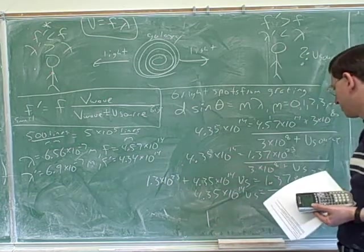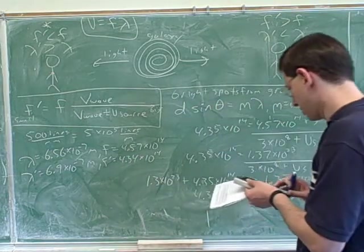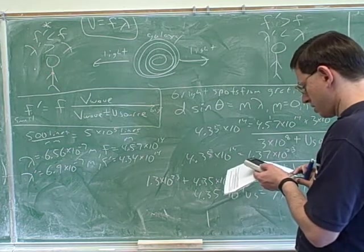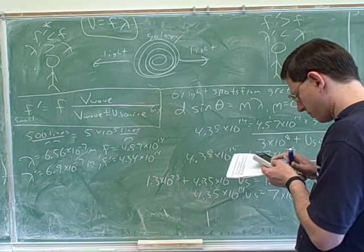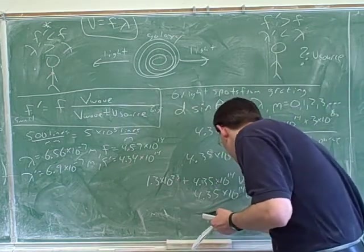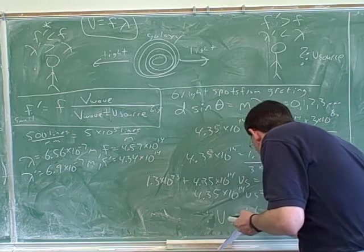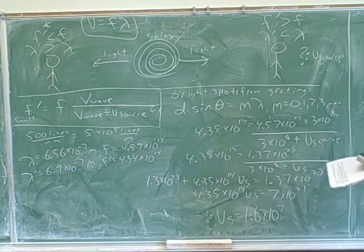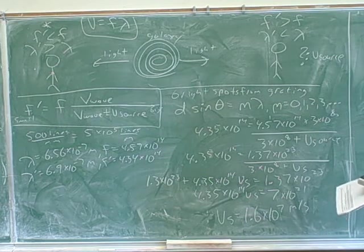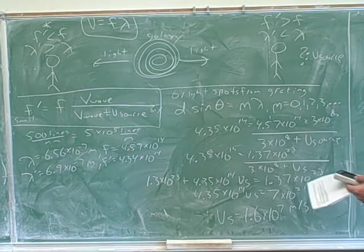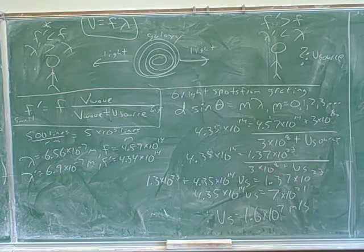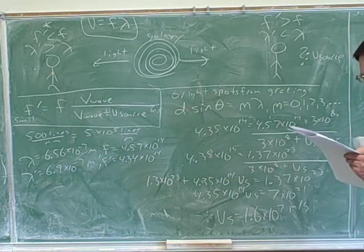You subtract 1.3 times 10 to the 23rd from both sides. I got v equals 1.6 times 10 to the 7th. Good. So now we finish off solving and we get... What are the units on that? Meters per second. Okay, good. Now I guess that's the answer they were asking us for.